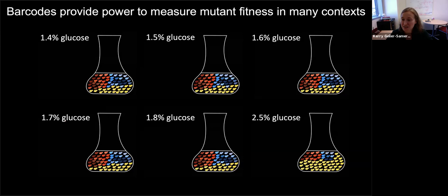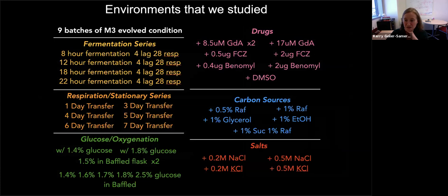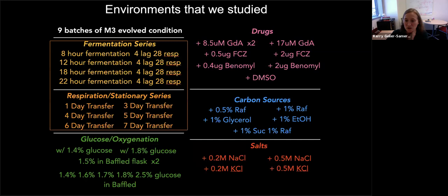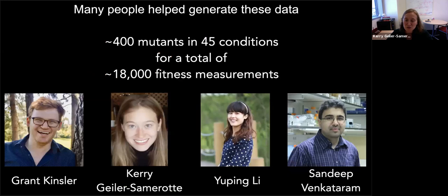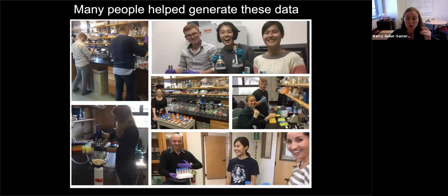After we did all the growth competitions, we sequenced the barcodes and tracked how they changed in frequency over time. Every point on the plot represents the average fitness of all lineages with a mutant in a given gene across 45 environments. Key takeaway: mutations in IRA-1 are adaptive in the original glucose-limited environment but suffer trade-offs in other environments. Diploids are nearly universally adaptive across all environments. GPB-2, like IRA-1, is a negative regulator of the RAS-PKA pathway, and similarly suffers trade-offs in very different environments, but also shows big fitness advantages in some novel environments.